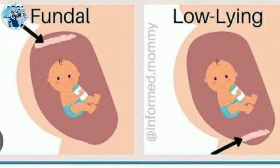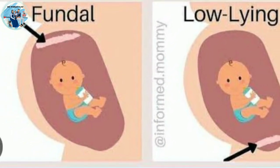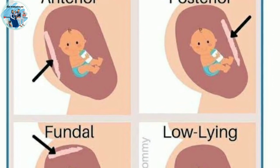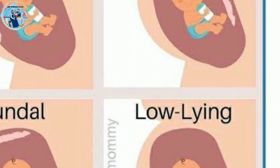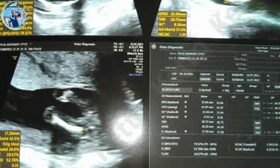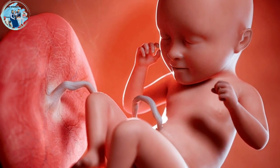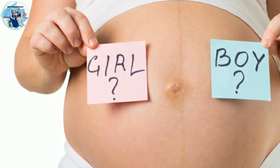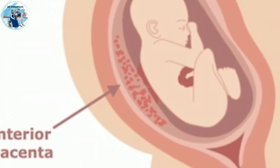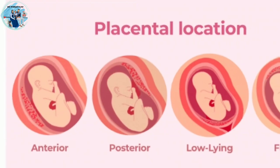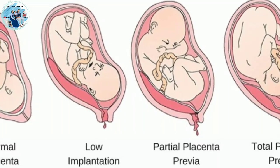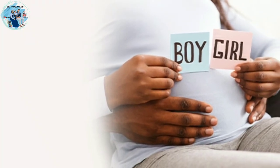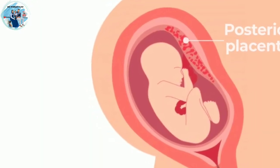This is called the fundal posterior placenta. The fundal anterior placenta can be entered in a second position. I said that my baby was in the last position. I asked if the baby was a girl. I had a scan report showing my baby's fetal heart rate, FHR, and the baby's blood count.